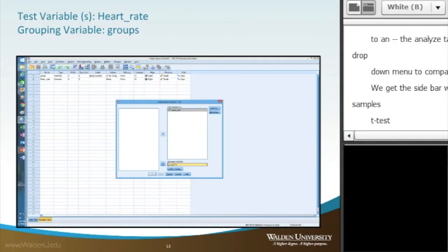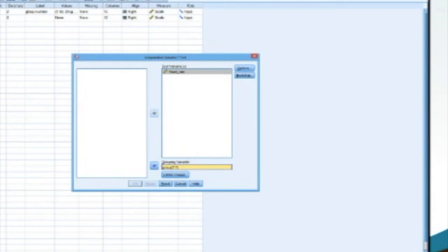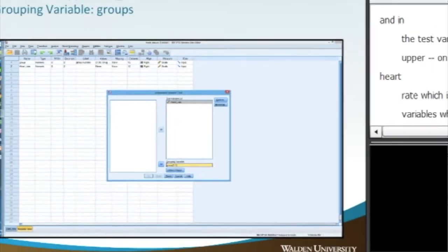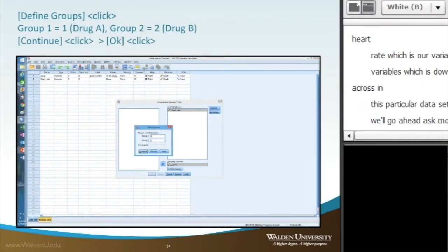We get a new window that opens up in the center. In the test variable, which is the larger box on the right-hand side, we'll move across heart rate, which is our variable. And then in the grouping variables, which is down below, we move across groups. Then we click on define groups.